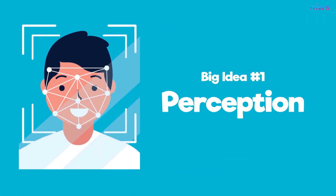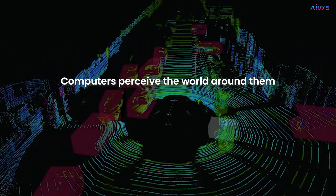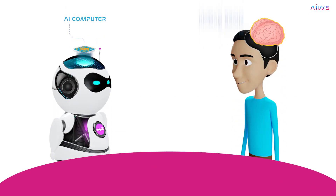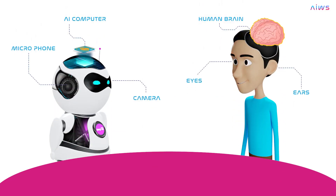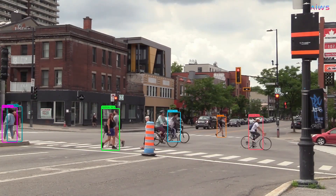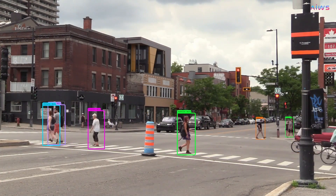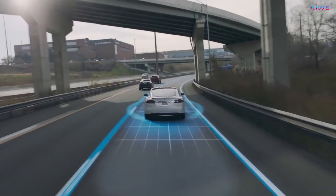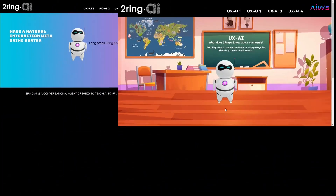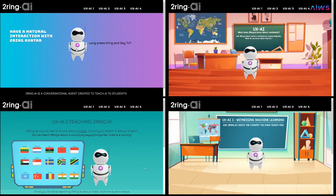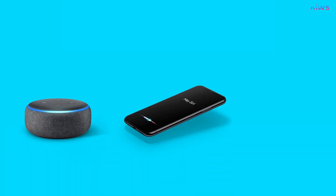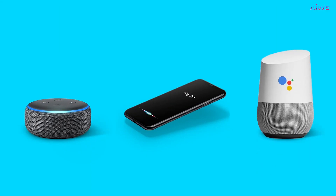The first big idea is perception. Computers perceive the world around them using sensors. Modern computers with AI can see with cameras, hear with microphones, and also use devices that can sense things that humans cannot. Computer vision is used to recognize objects and scenes, for example in Tesla's driverless cars. Speech synthesis helps to recognize spoken language, for example in Alexa, Siri, or Google Assistant.